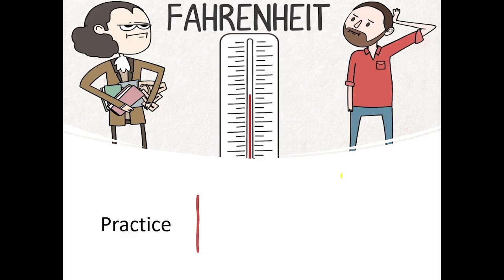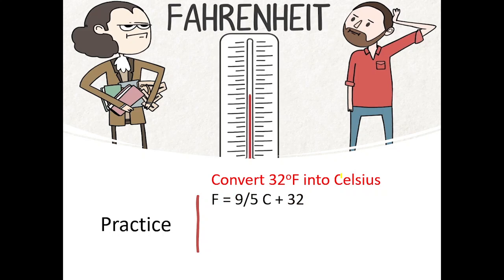Let's do a question: convert 32 Fahrenheit into Celsius. We are given Fahrenheit and we need to find Celsius. The formula we studied is F = 9/5 C + 32. We substitute F = 32, so: 32 = 9/5 C + 32.